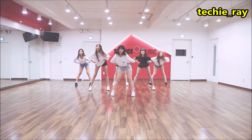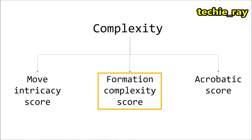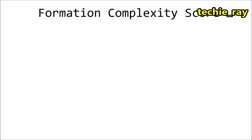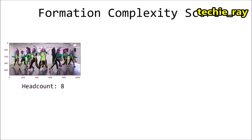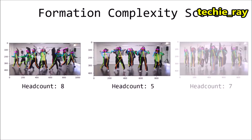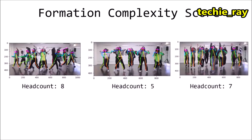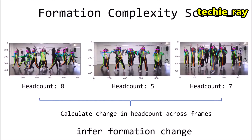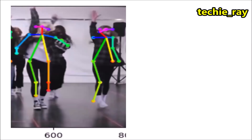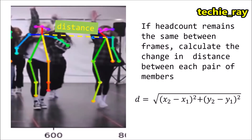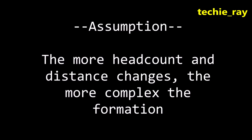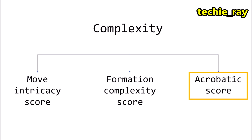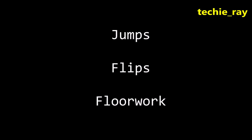Second, the computer analyzes formation changes. For every frame, the computer counts how many members are visible on screen and tracks the headcount. If the headcount changes between frames, that suggests a formation change. Otherwise, the computer calculates the change in distance between each member's pose to infer any formation changes. The more changes, the more complex the formation.